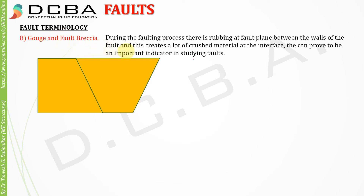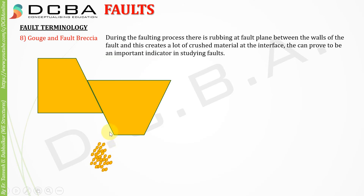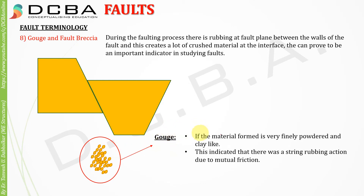Gouge and fault breccia: during the faulting process there is rubbing at the fault plane between the walls, creating a lot of crushed material at the interface. This can prove to be an important indicator in studying faults. When faulting takes place, the rocks rub against each other and generate fine particles — these fine particles are called gouge. If the material formed is very finely powdered and clay-like, this indicates a strong rubbing action due to mutual friction.